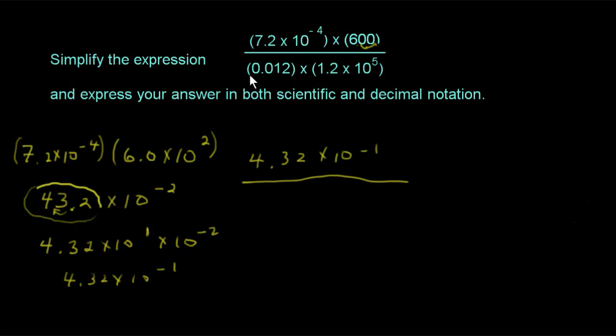Okay, let's see what you get when you multiply this 12 thousandths times 1.2 times 10 to the fifth. Write your answer for the denominator down here in decimal, rather in scientific notation. Go ahead and hit pause and do that now.